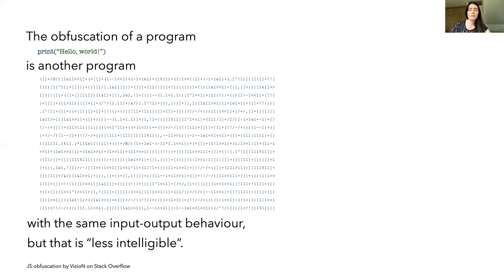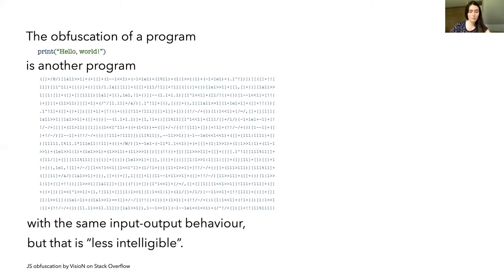So if you run this long piece of code in blue, you will also print the text hello world. It's functionally equivalent, but that's very hard to tell just by looking at this code. And a good obfuscation reveals nothing more about its functionality than what you can already learn from actually running it and just observing the input-output behavior of the program.